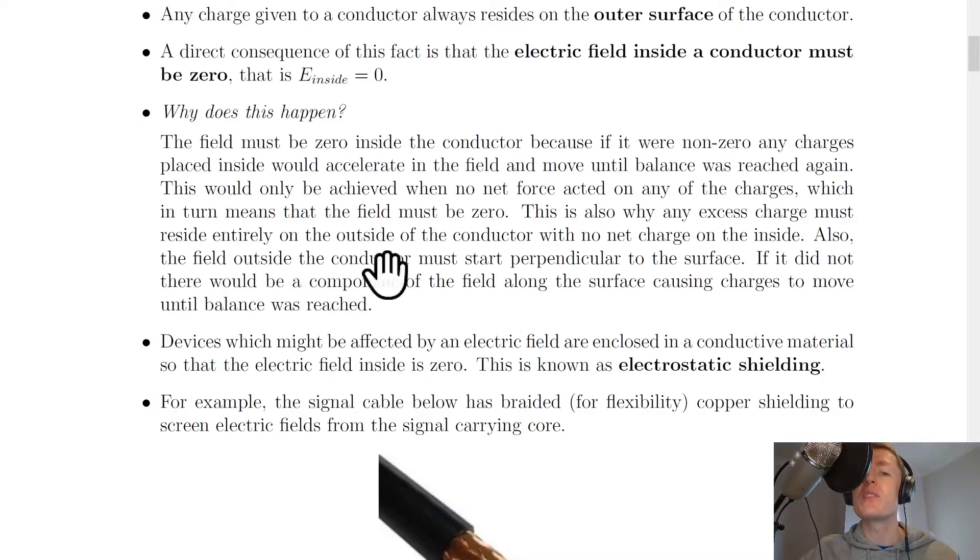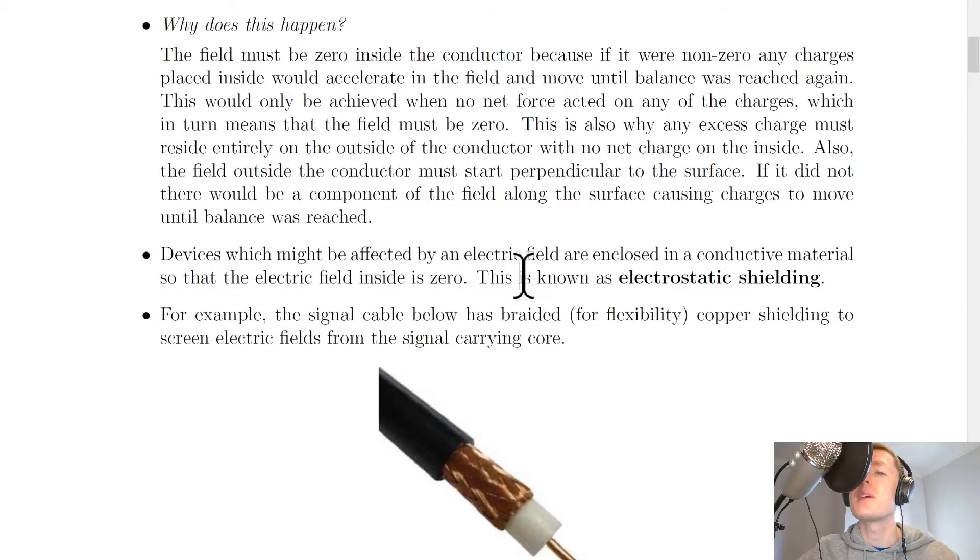This is also why any excess charge must reside entirely on the outside of the conductor with no net charge on the inside. Also, the field outside the conductor must start perpendicular to the surface. If it did not, there would be a component of the field along the surface causing charges to move until balance was reached.